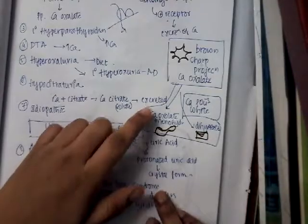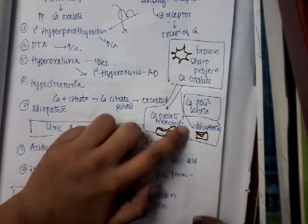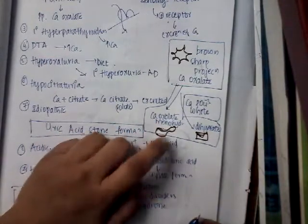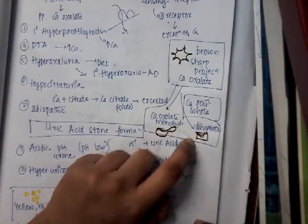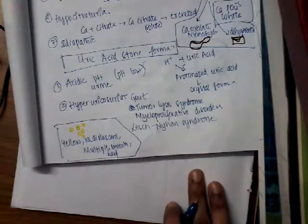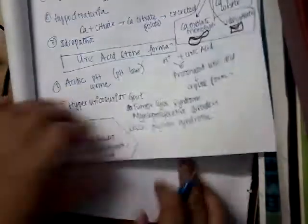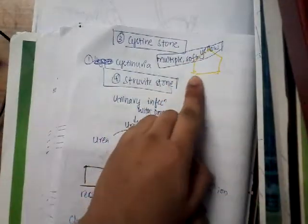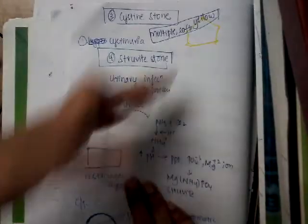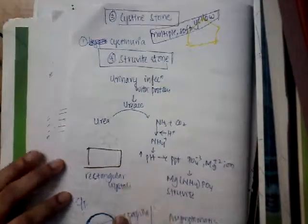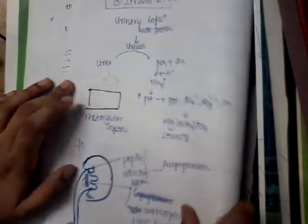Urine microscopy should be done; once you do urine microscopy you can see different types of crystals. Calcium oxalate monohydrate looks like a dumbbell shape, calcium oxalate dihydrate looks like an envelope shape, uric acid stones look small, round and multiple and can be yellow, cystine stones look like a pentagon shape, and struvite stones have rectangular crystals. Based on the type of crystals you can differentiate the type of stone.